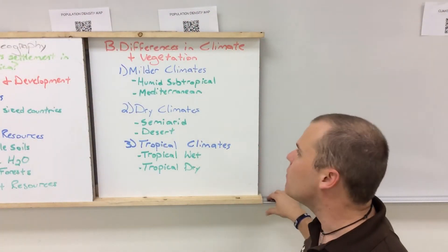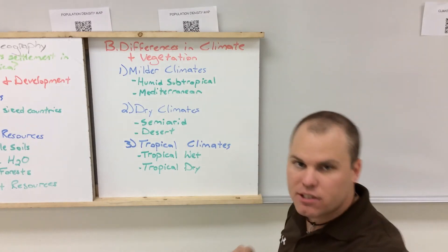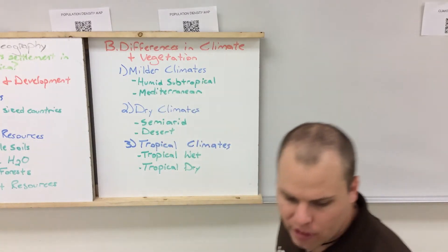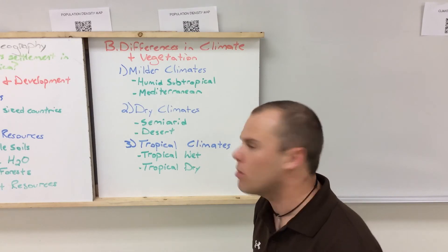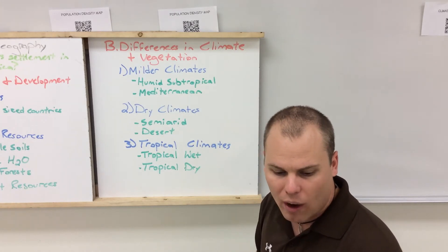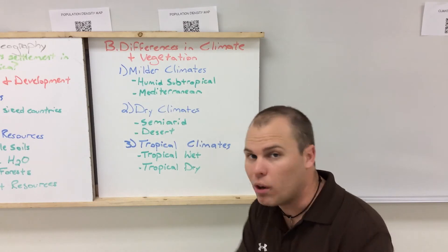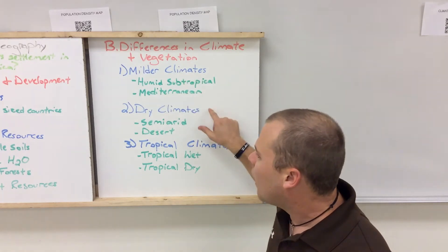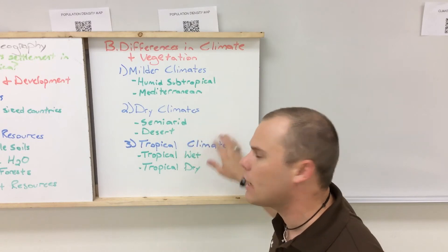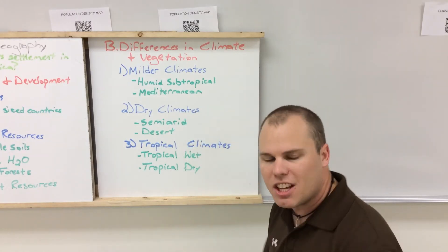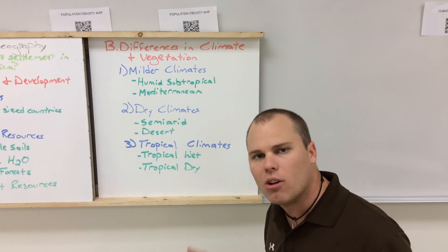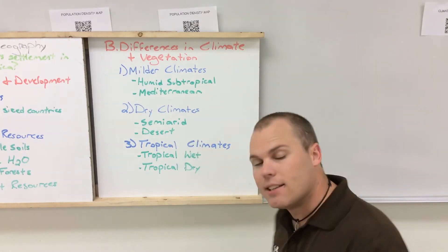There are also differences in climate and vegetation. Milder climate zones include the humid subtropical, dealing with the southern states of the United States — a little milder and fitting that humid subtropical zone. Mediterranean climates are found along the southern coast of California and not seen anywhere else in the region. For dry climates, semi-arid conditions appear along the Great Plains area, and desert climates like the Sonoran and Mojave deserts are found in the southwestern United States.